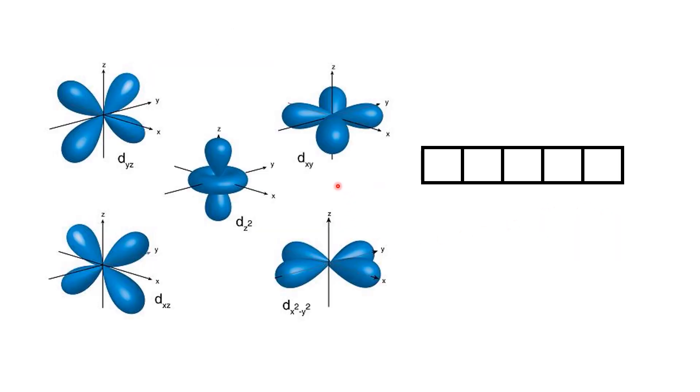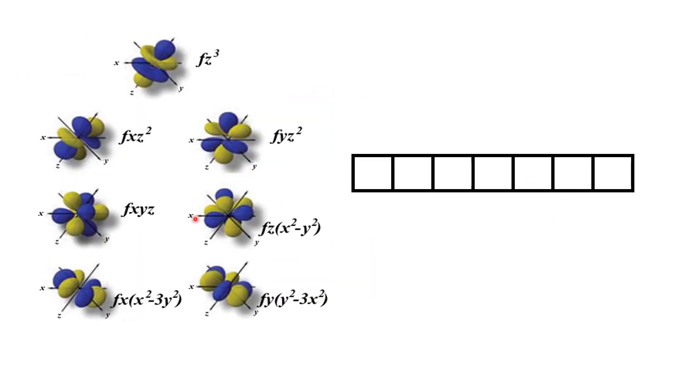D-orbitals have more complex shapes and can align in five different orientations. That's why, in orbital diagrams, they're represented by five boxes. F-orbitals have seven possible orientations, which is why they're represented by seven boxes in orbital diagrams.